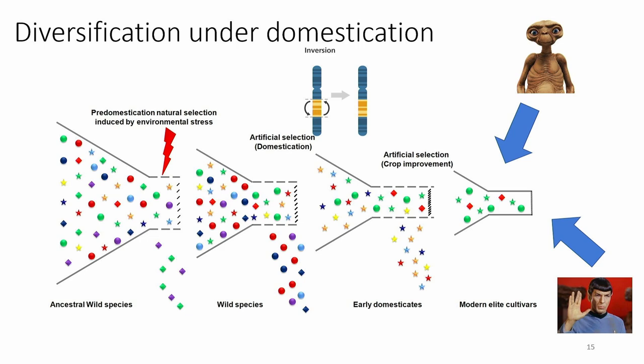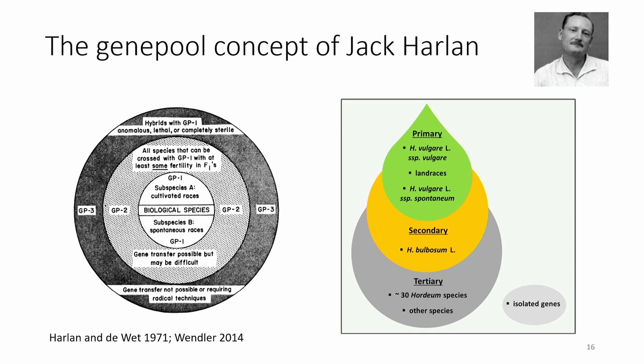Pan genomics can help enrich the barley gene pool by alien introgression. Let me introduce Jack Harlan's gene pool concept — an important barley geneticist from the US who grouped wild relatives of a species not by phylogenetic distance, but by how easily they are crossable with the crop and how easy it is to transfer genes.